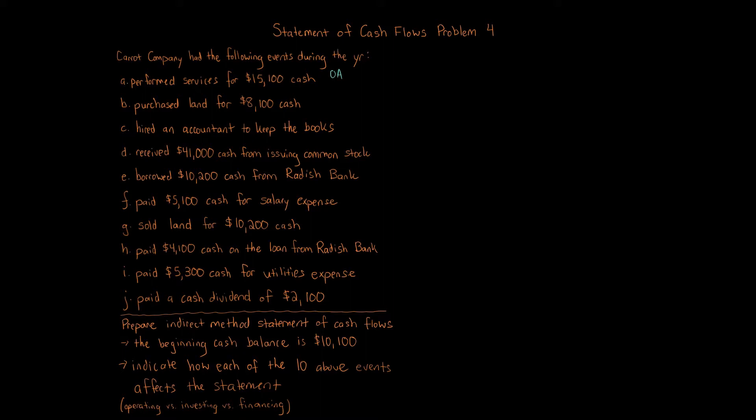You can either be given net income, net loss, or the revenues or expenses of the financial statements. If you're given net income or net loss, just use that number. If you're given the revenues and expenses, you're going to have to put those into the statement of cash flows. B — purchase land for $8,100 cash — that's going to be an investing activity because we're purchasing property, plant, and equipment.